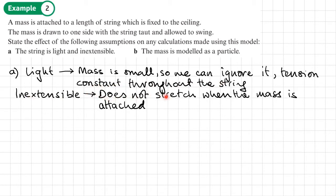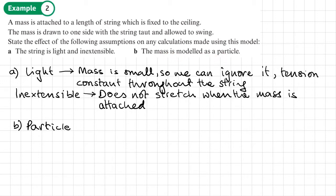Inextensible: this must not stretch when the mass is attached. And then part b, the assumption that the mass is modeled as a particle. So with a particle, the dimensions of the mass are small, so it's negligible. The mass is concentrated at a single point. And we can ignore air resistance and rotational forces, i.e. spin.